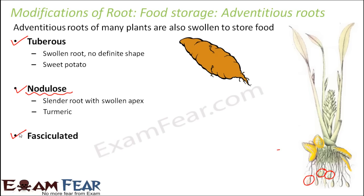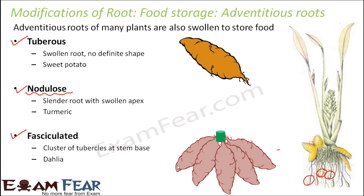The third type of adventitious root modification is a cluster of tubercles at the stem base, seen in dahlia. These are similar to tuberous roots — swollen with no definite shape — but instead of one such root, you have bundles of roots originating from the stem base. This kind of root is known as fasciculated and is generally seen in plants like dahlia.